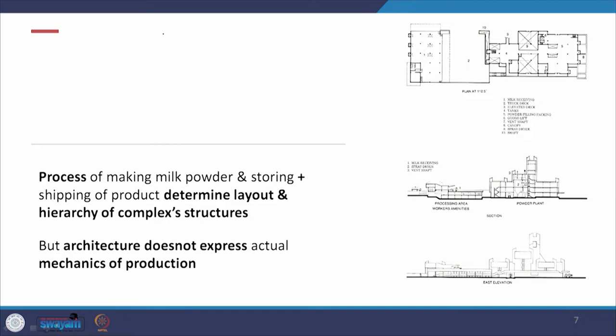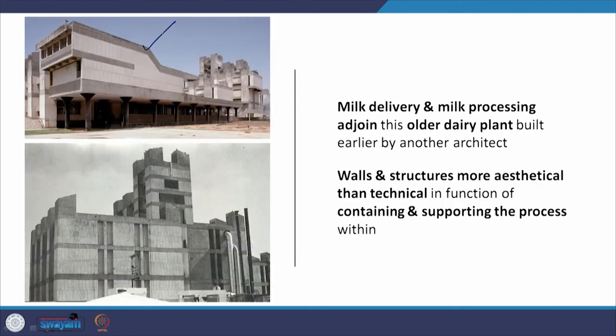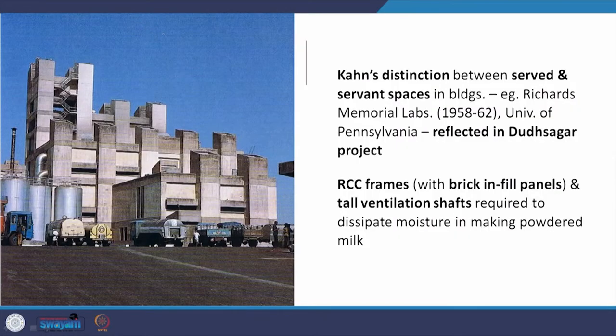Coming back to this building, the process of making milk powder and storing and shipping the product determined the layout and hierarchy of the complex structures. But architecture does not express the actual mechanics of production — the walls and structures are more aesthetic than technical. The architect has embodied the technical aspect into a very aesthetic, sculptural or geometric form. Kahn's distinction between servant and served spaces found in the Richards Memorial Lab at the University of Pennsylvania is also reflected in the Dootsagar project.